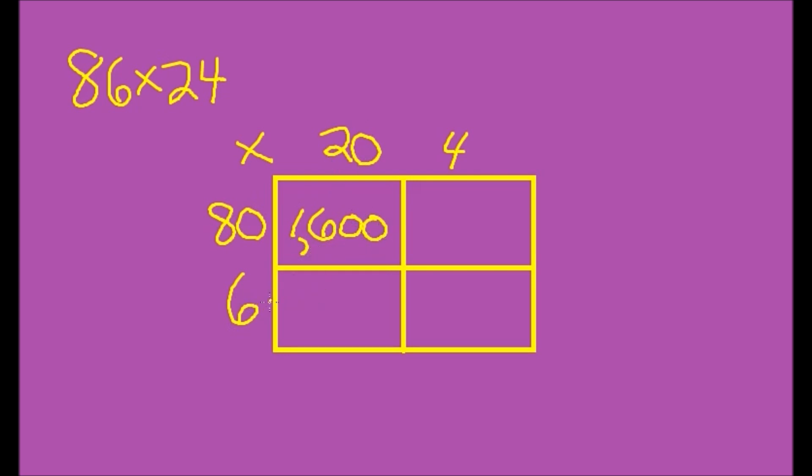Down here I have 20 times 6. I do the 2 times 6 which is 12, and then I add on the zero as a shortcut.